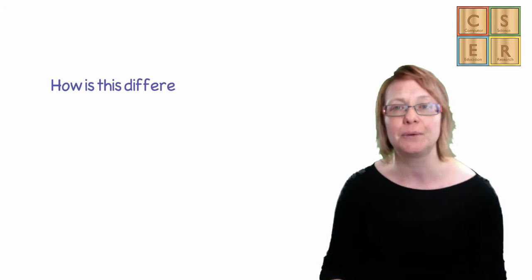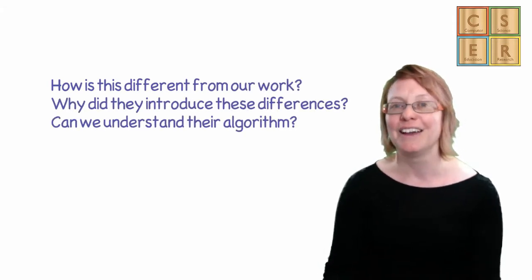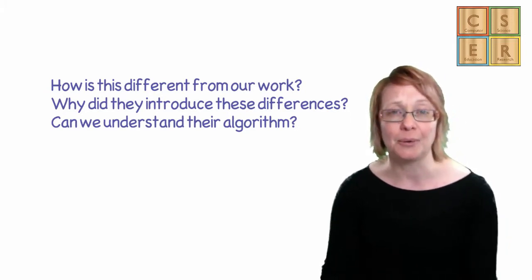Students can be asked to review the other students' work by asking a series of questions that help them contrast their work with the other students and observe different ways of achieving the same goal. How is this different from what we came up with? Why did they introduce these differences? Can we understand how the algorithm works?